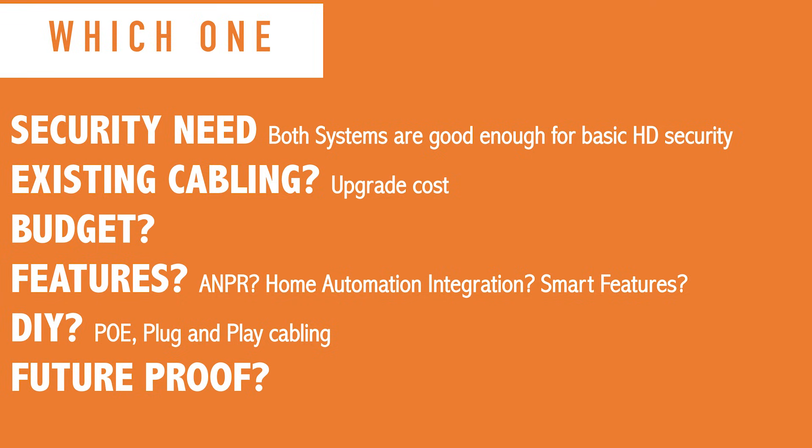What's your budget? Generally, analog systems are cheaper than IP systems, so if you're on a budget an analog system might make sense. What sort of features are you looking for? Do you require number plate capturing, home automation integration, or other smart features? In which case, look at an IP system. Are you looking to fit this yourself as a DIY project? Have a look at both options — most of the time if you're getting a good deal, that may be a major factor, but run it past the features above to make sure you're not missing out.